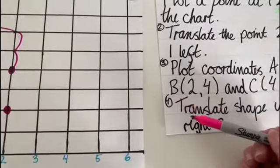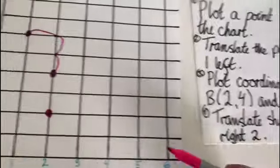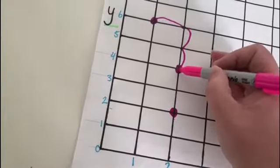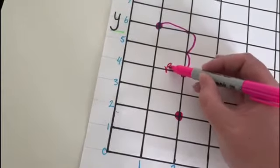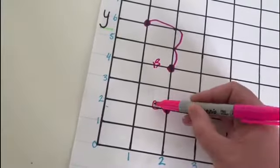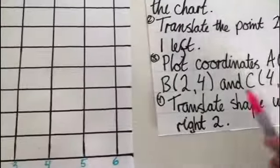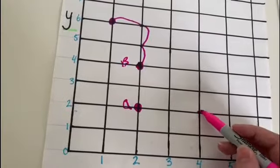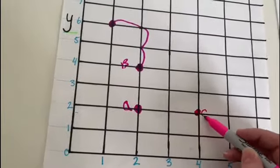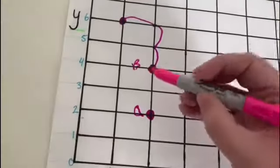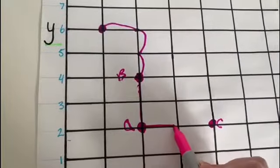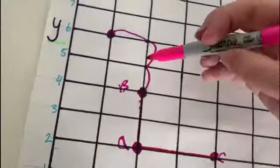Then I'm going to find 2 on my x-axis and 4 on my y-axis. 2 on the x, 4 on the y, and that is point B. And then C is 4 on the x-axis and 2 on the y. So I go to the 4 on the x and 2 on the y and that is point C. And because it's a shape I can connect the lines in between to draw my shape.